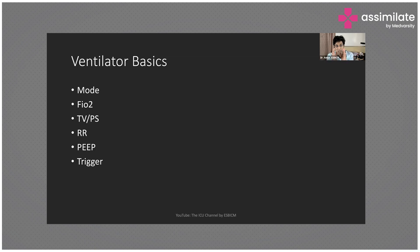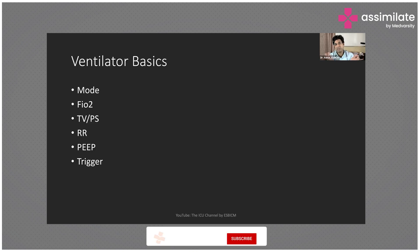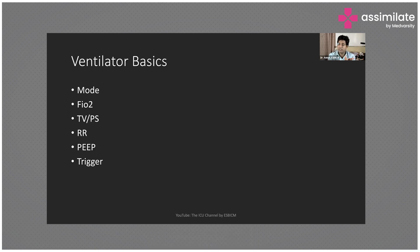SIMV is in between control mode and pressure support mode — it is a hybrid mode. Some breaths are controlled mandatory breaths provided by the ventilator, and the remaining breaths are pressure support breaths that the patient takes with ventilator support. For example, if a patient is taking 20 breaths, 10 may be mandatory controlled breaths and the remaining are patient-triggered with pressure support.